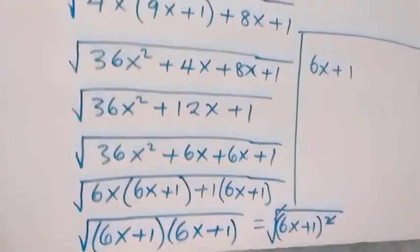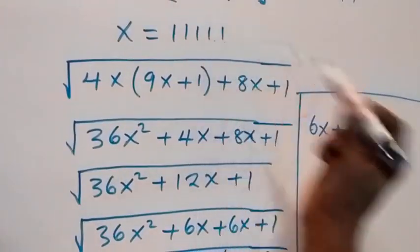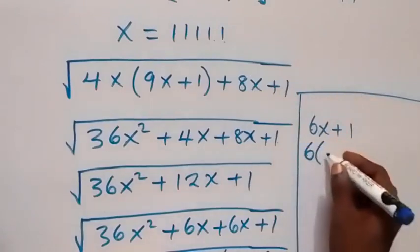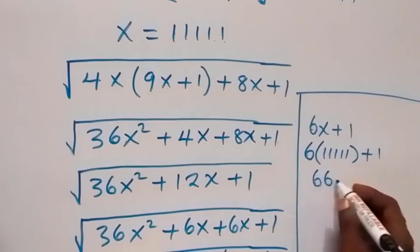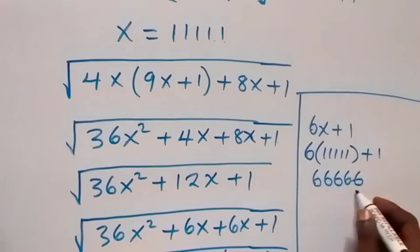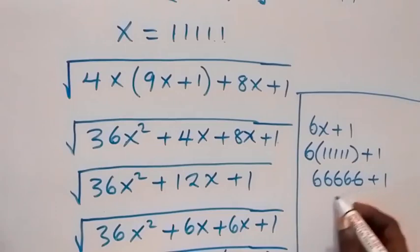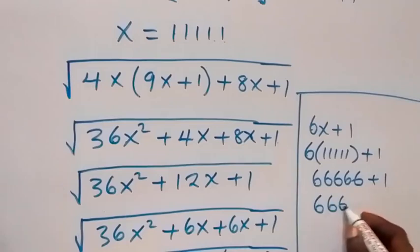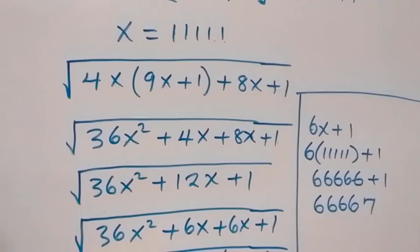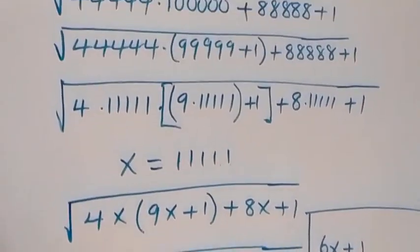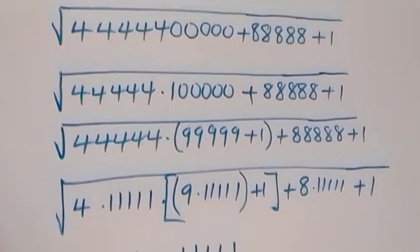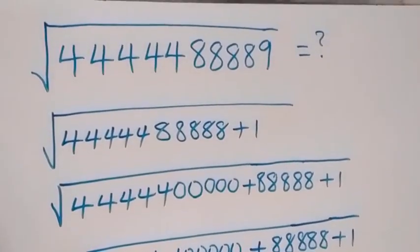Recall that we represented x as 11111, so we put it back: 6 times 11111 plus 1. When we multiply, we have 66666 — five 6s — plus 1, which gives us 666667. So here we have the final answer: 666667. Thank you for watching, don't forget to subscribe for more exciting videos, turn on the notification bell, share this video, give it a thumbs up, and leave a comment. See you next class, bye for now.